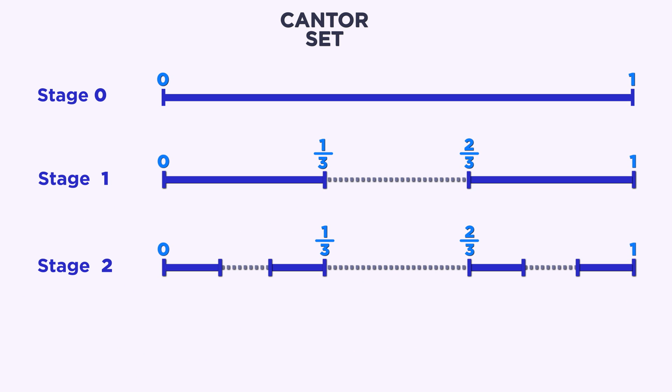In stage 2, we're going to remove the middle third from each of those two pieces. So we remove 1/9 to 2/9 and 7/9 to 8/9. This leaves us with four pieces: 0 to 1/9, 2/9 to 1/3, 2/3 to 7/9 and 8/9 to 1.